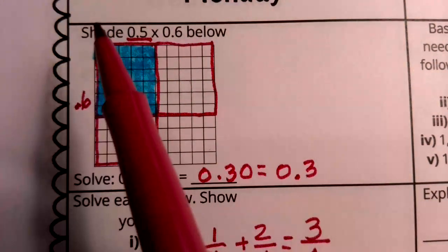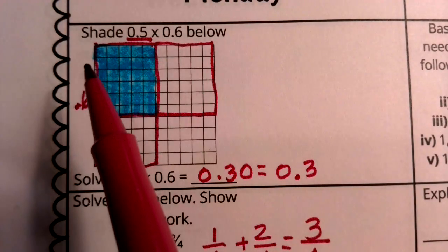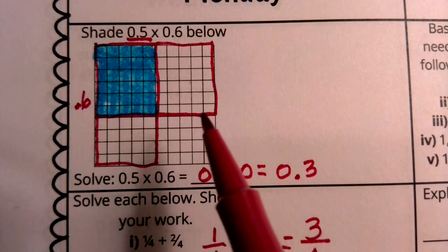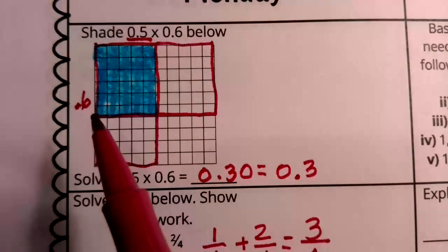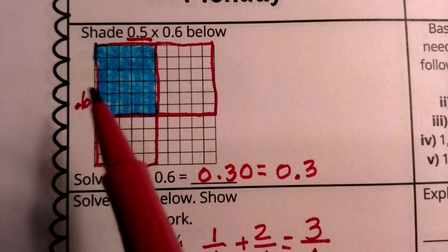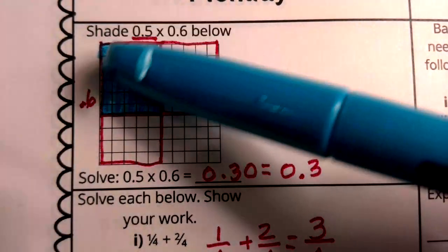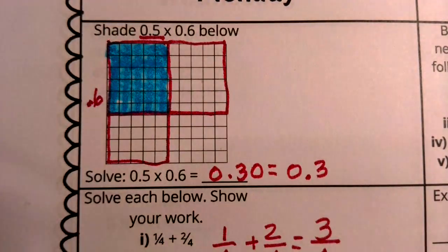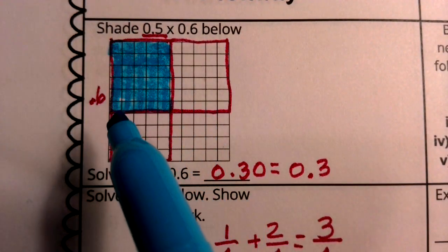Now I didn't shade them in blue yet. All I did was box them. The next thing that I did was I looked at six tenths, but I looked at that horizontally and noticed I boxed six out of ten for these rows. That shows my six tenths. Now what I then took my highlighter and highlighted was where that overlap occurred. So the overlap occurred here.